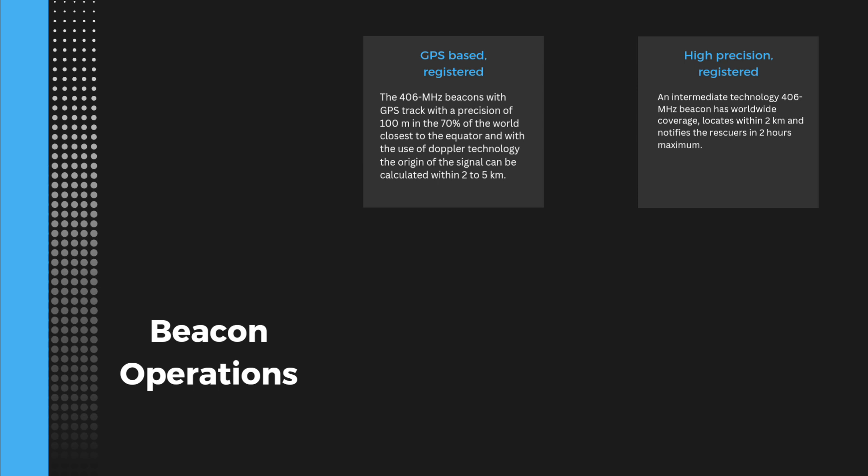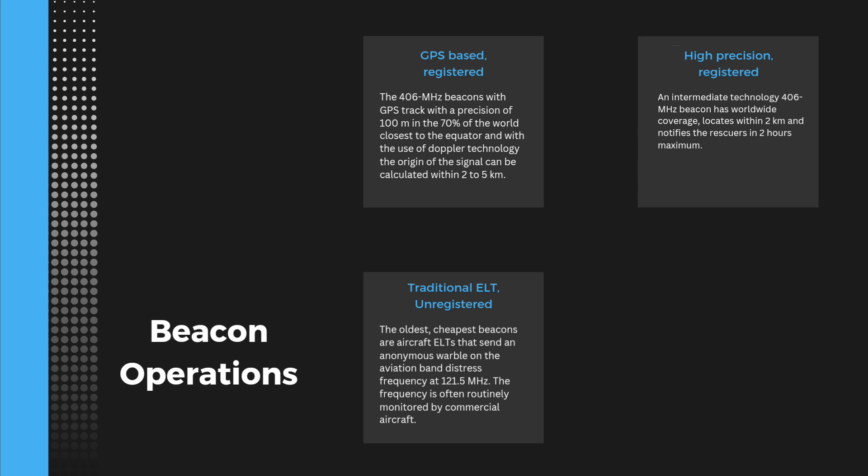Both of these types of beacon usually include an auxiliary 25 mW beacon at 121.5 MHz to guide the rescue aircraft. Number 3: Traditional ELT, which is the oldest and cheapest beacon, sends an anonymous wobble signal at 121.5 MHz. These signals could be detected by satellites over only 60% of the earth and require up to 6 hours for notification, locating within 20 km.